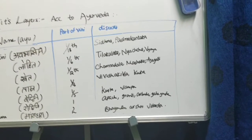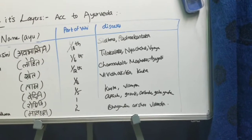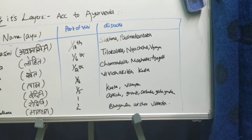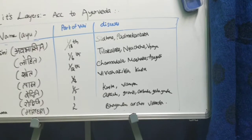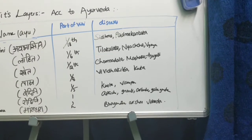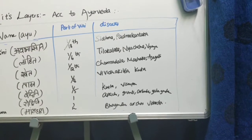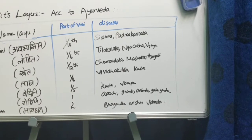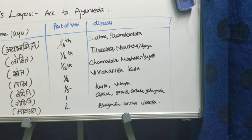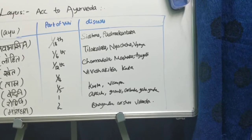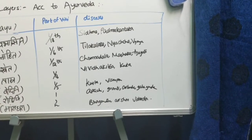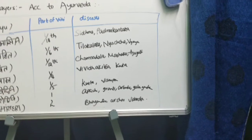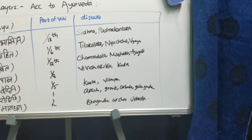Diseases associated with each skin layer: Avabhasini — Chermadal, Ajagalli, Mashak; Tamra — Vividhakilas, Kushtha; Vedini — Kushtha, Visarpa; Rohini — Apchi, Grandi, Arbuda, Galaganda; Mansadara — Bhagandara, Arshas, Vidartha.